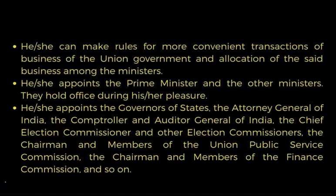The President can make rules for the more convenient transaction of business of the union government and allocation of business among ministers. He or she appoints the Prime Minister and other ministers, who hold office during the President's pleasure. He or she also appoints the Governors of states, the Attorney General of India, the Comptroller and Auditor General of India, the Chief Election Commissioner and other election commissioners, and the Chairman and members of the Union Public Service Commission and the Finance Commission.